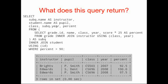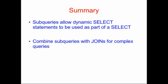Remember, we had two different columns named year, so the alias subq is used to distinguish which year and which name we want in our output table. In this lesson, we've looked at subqueries. They allow dynamic select statements to be used as part of a select, and they allow you to combine different queries. Remember, you don't only have to use select statements inside select statements — you can also use them in updates, inserts, and deletes.